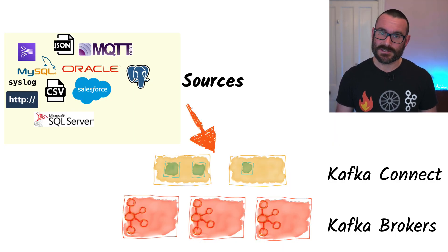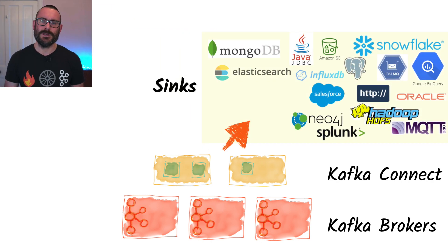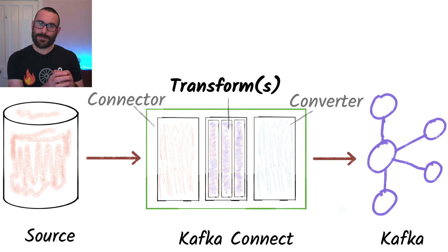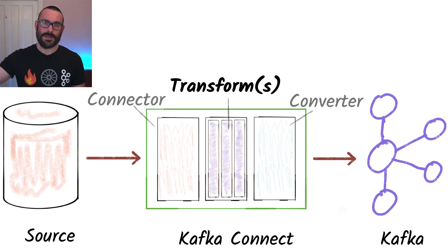Today I want to show you one of the single message transforms that you can use as part of Apache Kafka Connect. Kafka Connect, if you're not familiar with it, is part of Apache Kafka. It's the integration API for Apache Kafka and it lets you stream data in from systems upstream into Kafka, and from Kafka downstream to other places. Single message transforms are part of Kafka Connect and they let you optionally put processing into part of that ingestion pipeline, either at the ingest point or egress.